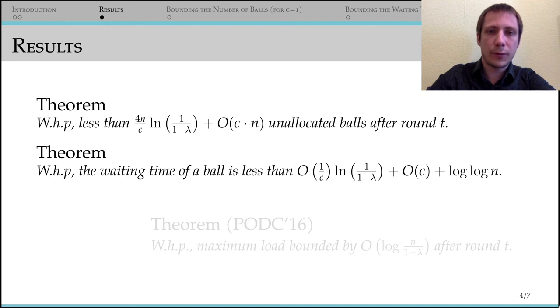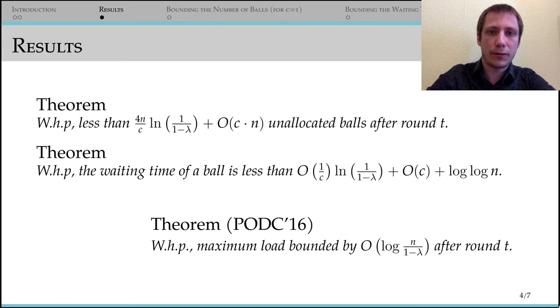There are results from 2016 with infinite capacity to compare against. When balls arrive in batches of size lambda n and choose the lesser loaded of two bins in parallel, the waiting time equals the number of balls in a bin when a ball arrives there. With a suitably chosen capacity, we can reduce the waiting time, both for constant lambda as well as for values approaching one.